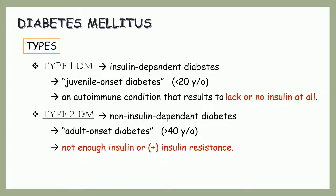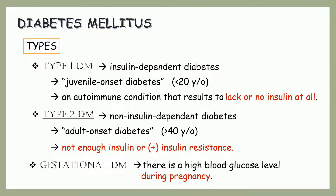It is when your cells don't respond to insulin. Finally, is gestational diabetes mellitus. It happens when there is a high blood glucose level during pregnancy. Insulin-blocking hormones like estrogen, cortisol, and human placental lactogen can block insulin, which can cause insulin resistance during pregnancy.